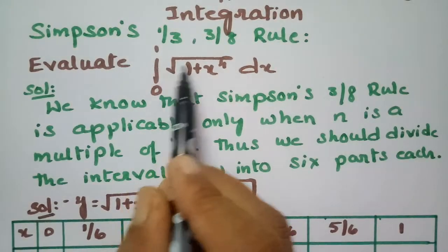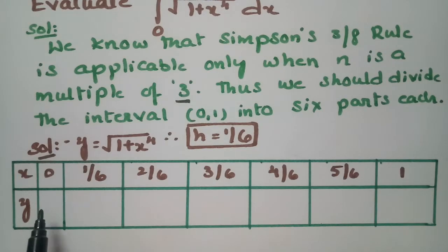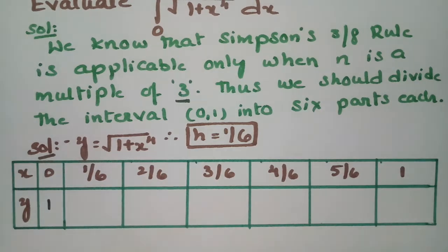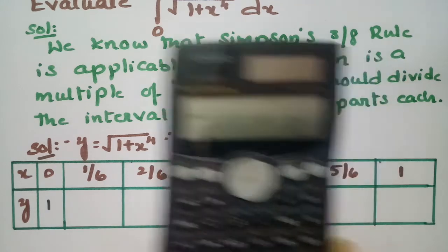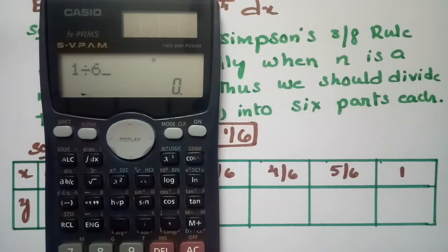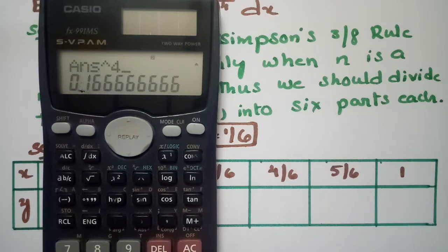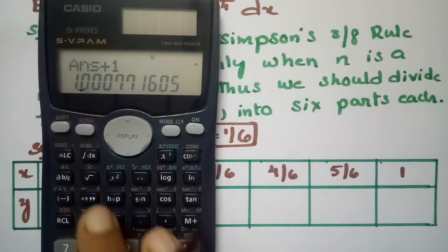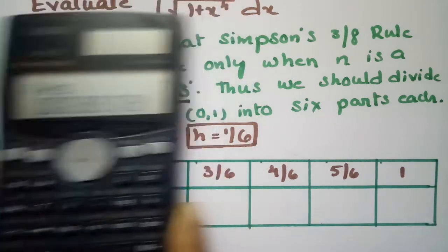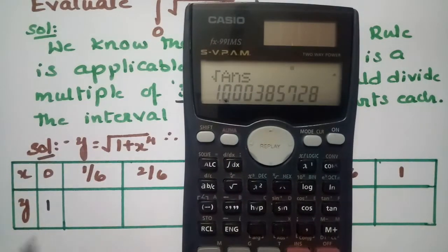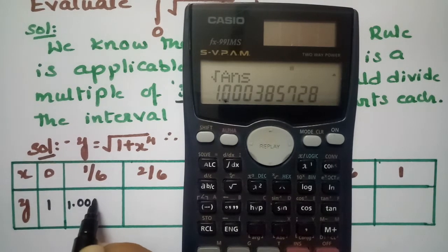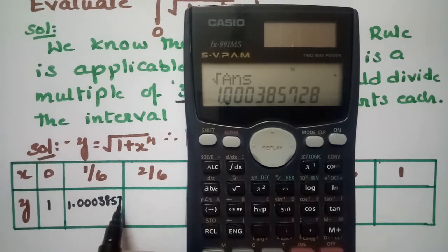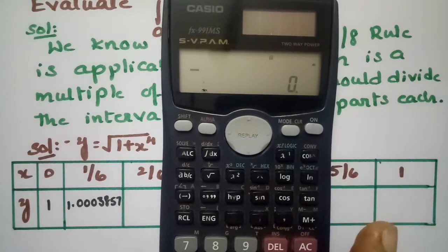Our y value is y = √(1+x⁴). We need all the values. For x = 0: √(1+0⁴) = √1 = 1. For x = 1/6: √(1 + (1/6)⁴). The value is 1.0003857.